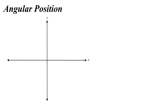In this video we're going to talk about angular kinematics, also known as rotational motion. Let's start with angular position. Angular position is just what we mean when we talk about some angle theta. And we use a very special way to measure theta when we're talking about angular kinematics or rotational motion.